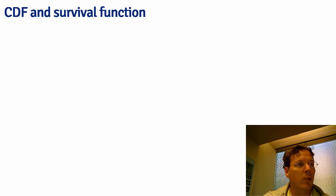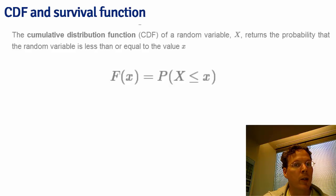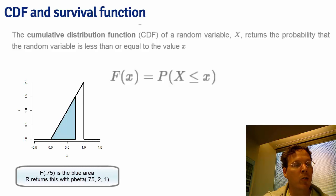Certain areas of a density are so useful we give them names. The cumulative distribution function of a random variable X returns the probability that X is less than or equal to a value x. This definition applies whether x is discrete or continuous. In R, whenever you call p followed by a density name, it returns the cumulative distribution function.